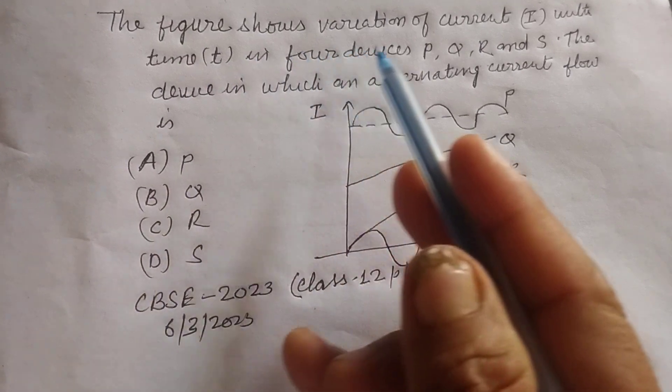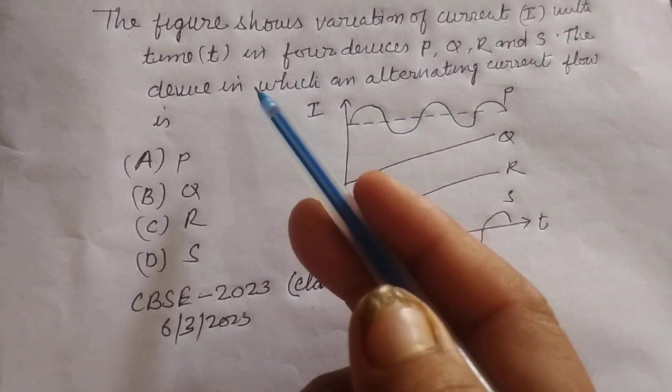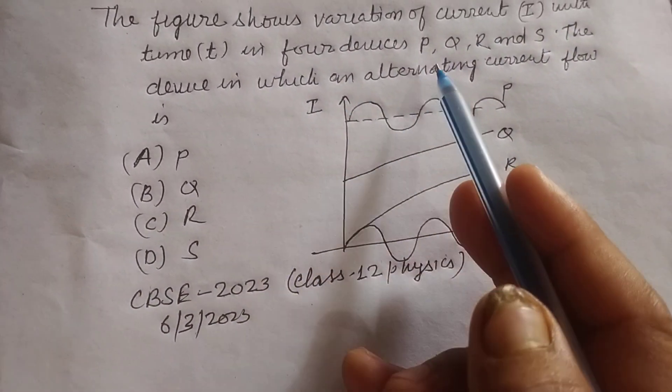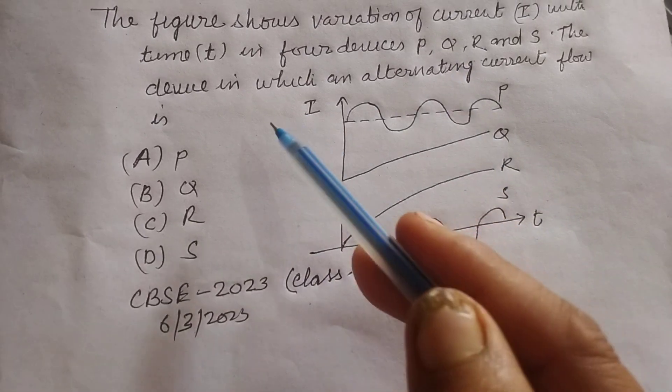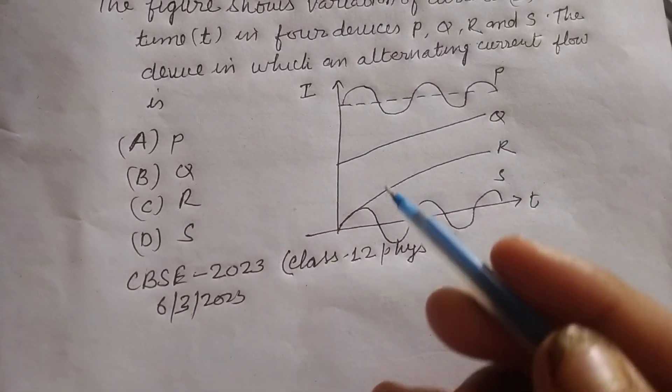So the question is: the figure shows variation of current I with time t in four devices P, Q, R and S. The device in which an alternating current flows is...